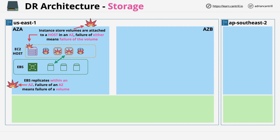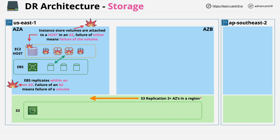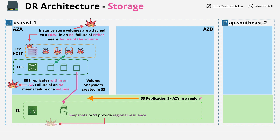We also have the Simple Storage Service, known as S3. Data stored in S3 in most cases is replicated across multiple availability zones within a single region. You can create a snapshot of an EBS volume and store it in S3, which means the snapshot now benefits from this increased level of resilience — a snapshot would require an entire region to fail in order for that snapshot to be lost. Note that you can't use snapshots directly or connect a snapshot to an EC2 instance; snapshots are read-only copies of data on a volume at a given point in time.